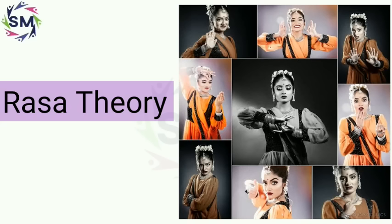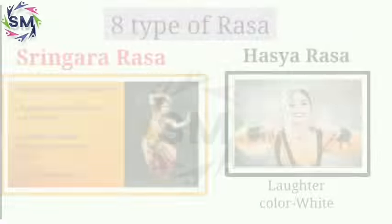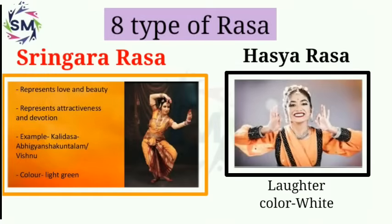Mainly eight types of Rasas have been described, though many different writers define and characterize them in their own ways. The first is Shringar Rasa — it symbolizes or represents romance, love, and attractiveness. Its god is Vishnu and its color is light green. Shringar Rasa is of two types: one is Sanyog Rasa and the other is Viyog Rasa.